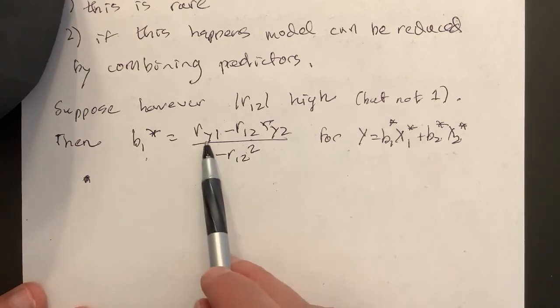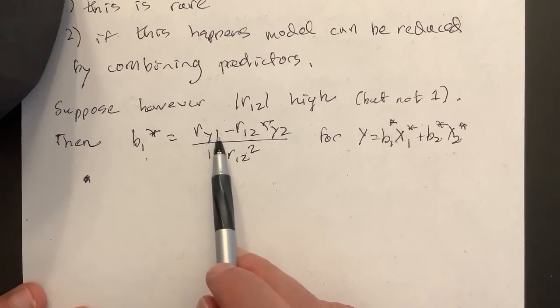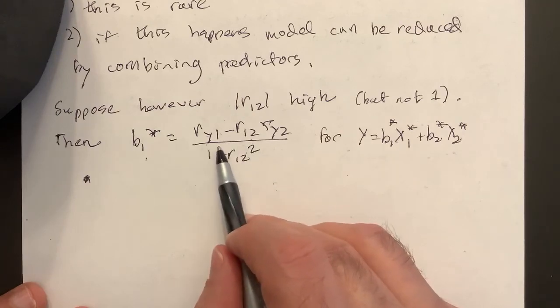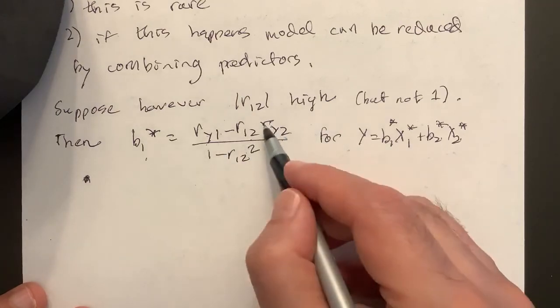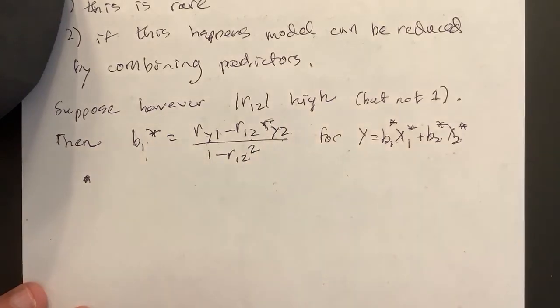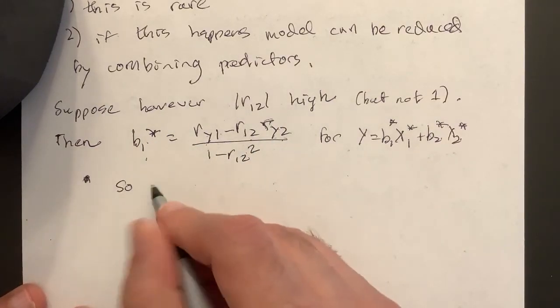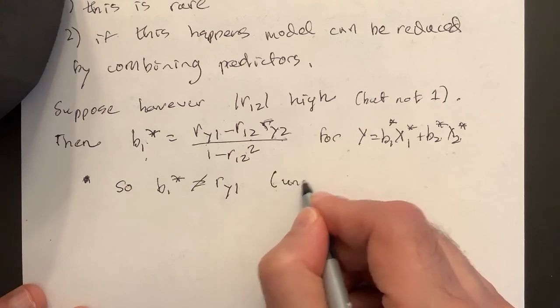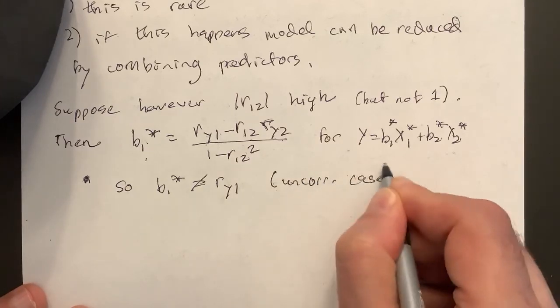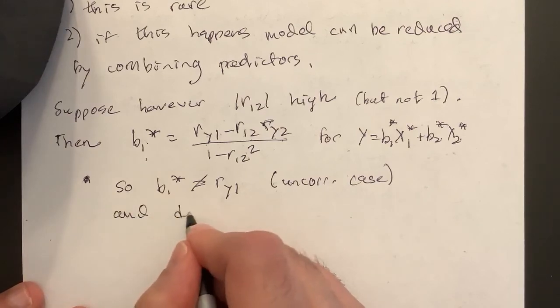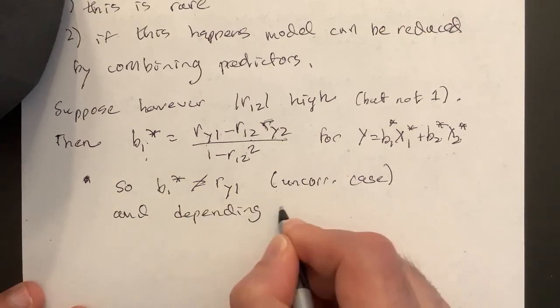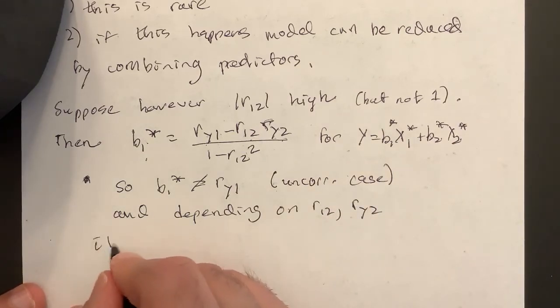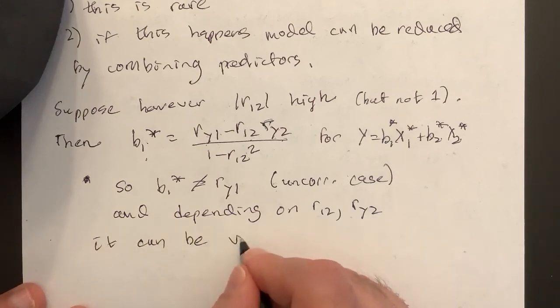Okay, so this implies that b1* is not equal to just ry1, right? So b1*, which is in the uncorrelated case, and depending on r12 and also on ry2, it can be very different.